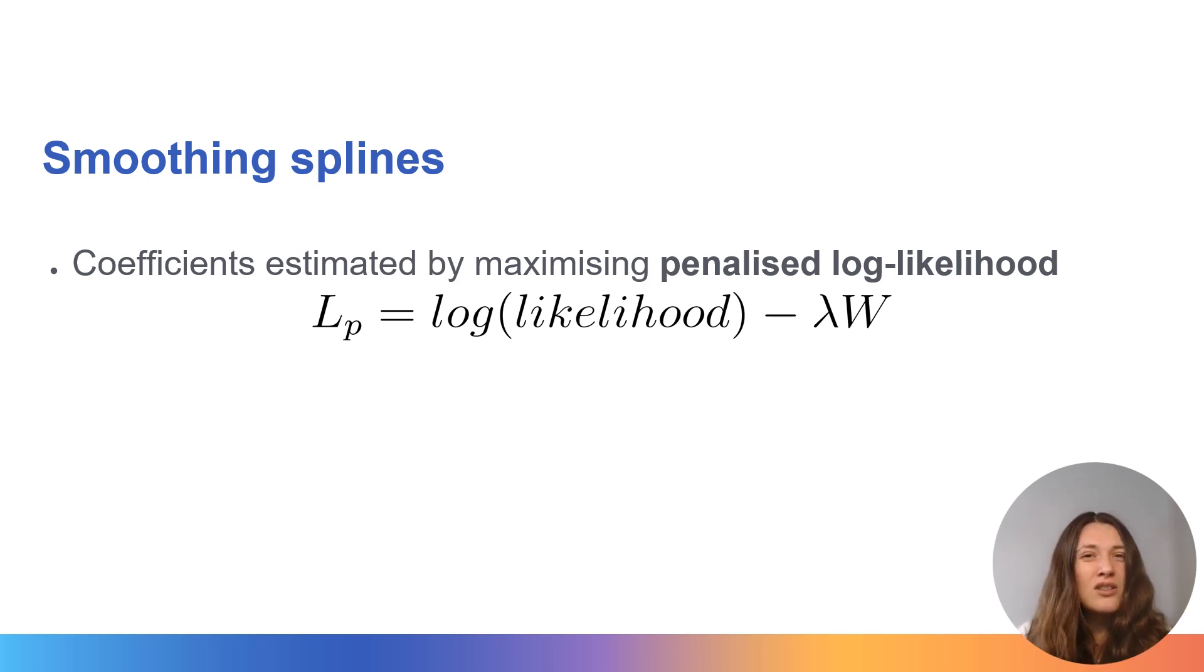Without this penalty, then most likely what would happen is we would end up with a model that just interpolates our data, so it overfits the data, limiting the inferences we can make.